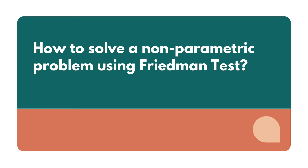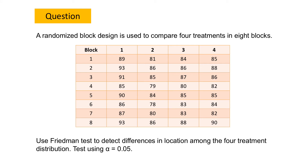Now let's have a look at how we're going to solve a non-parametric problem using Friedman test. Suppose we are given this question: a randomized block design is used to compare four treatments in eight blocks. Use Friedman test to detect differences in location among the four treatment distributions. Test using alpha equal to 0.05. As you can see in this question, it is clearly indicated what is block and what is treatment. Unfortunately, it will not be the case for all problems, because in some instances you have to determine by yourself what is block and what is treatment. The hint is to see what is the focus of the question.